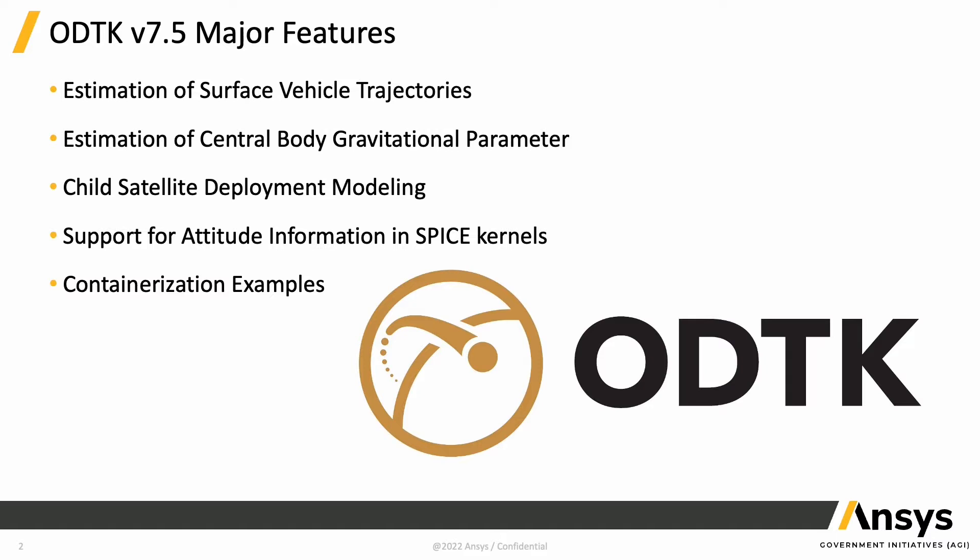The first feature is estimation of surface vehicle trajectories. This represents the first time within ODTK that we can actually model moving vehicles without a force model behind them, like you would have with a satellite. We have a simple new stochastic model that we're using to estimate the surface velocity and direction of these vehicles.